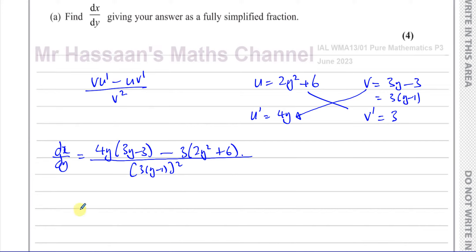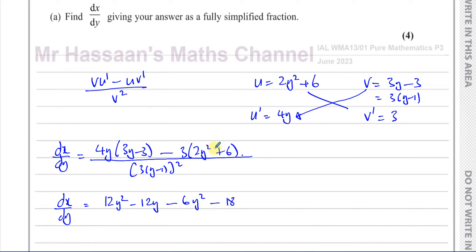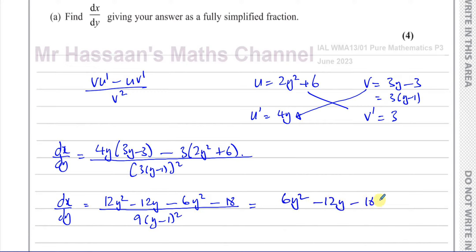Now we want to simplify as much as possible, so we expand the brackets in the numerator. That gives 12y squared minus 12y, minus 6y squared minus 18. Be very careful about the signs — minus times plus is minus. The denominator: squaring the 3 gives 9, so we have 9 times (y minus 1) squared. Combining like terms: 12y squared minus 6y squared is 6y squared, giving 6y squared minus 12y minus 18, over 9 times (y minus 1) squared.